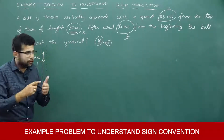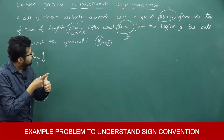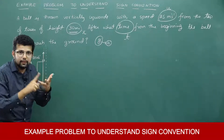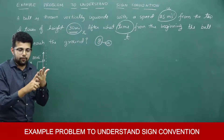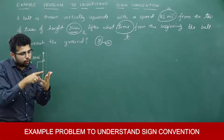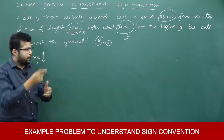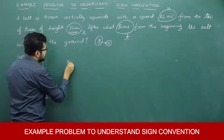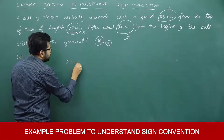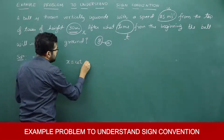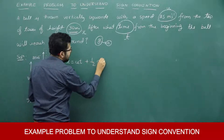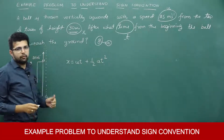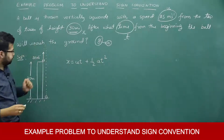We should identify which equation contains X, U, T, and A. The appropriate equation is x = ut + ½at². We need to find T.